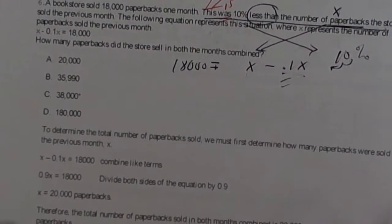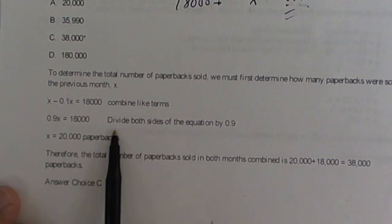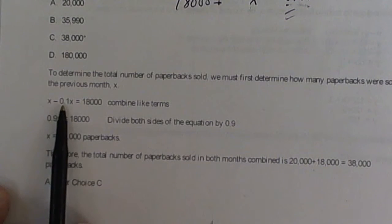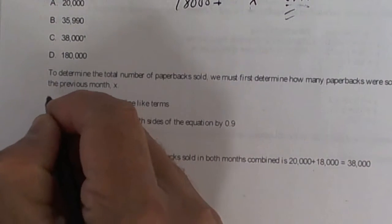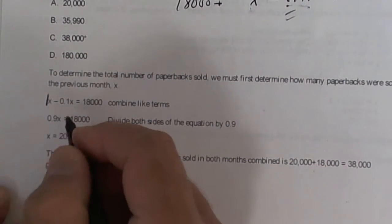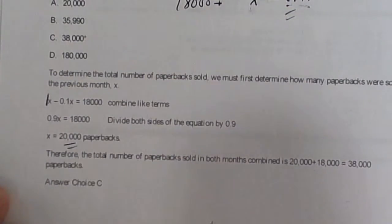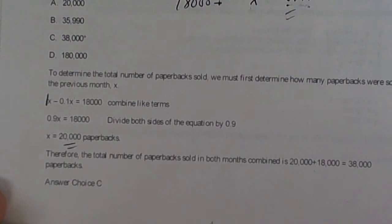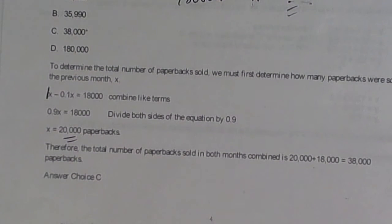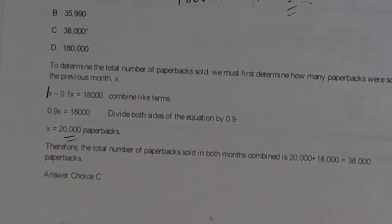So you can look at their solution the way they did it here. What you do now is combine this. This is a one right here. And so one minus .1 is .9. And then you divide by .9. And the answer is 20,000. I'm going to pause the video here. We'll call this part one of the EOC practice from the Florida Virtual School.